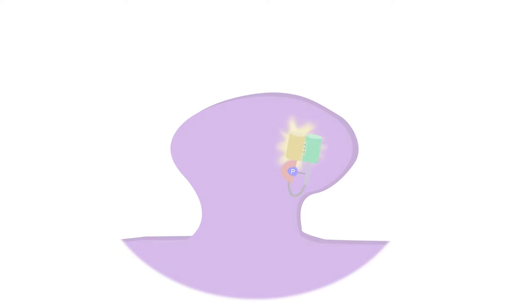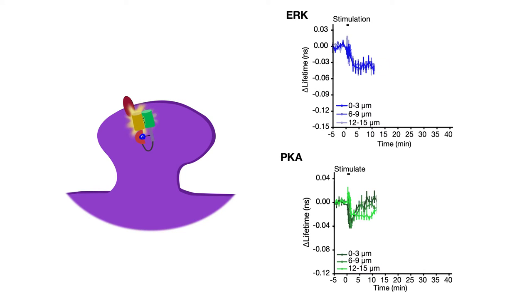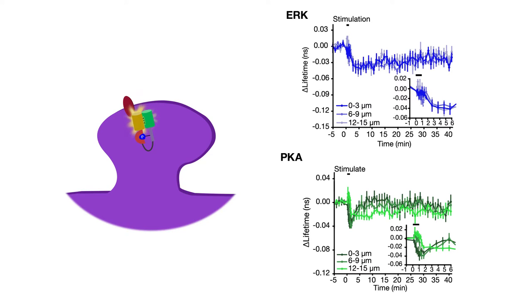The scientists wanted to be sure the apparent spread wasn't caused by movement of the sensors rather than the spread of kinase activity. So they tethered the sensors to an anchor protein in the spine. ERK and PKA activity spread over a similar distance when they used the anchored sensors, confirming they were witnessing the spread of kinase activity.